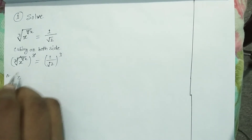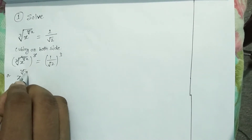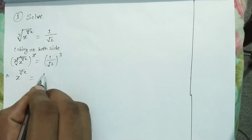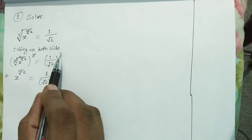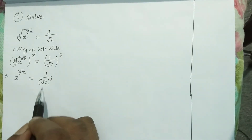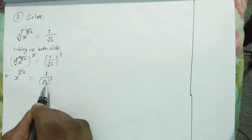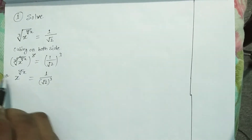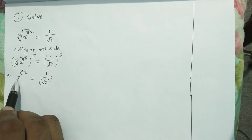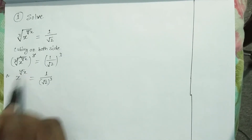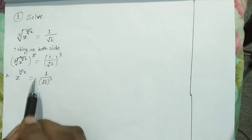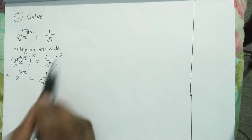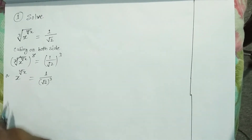Now we have: x raised to power fourth root of x is equal to 1 to the power 3 over square root of 2 to the power 3. Since 1 to any power is 1, and the cube root is cancelled, we have x raised to power fourth root of x is equal to 1 by square root of 2 to the power 3.